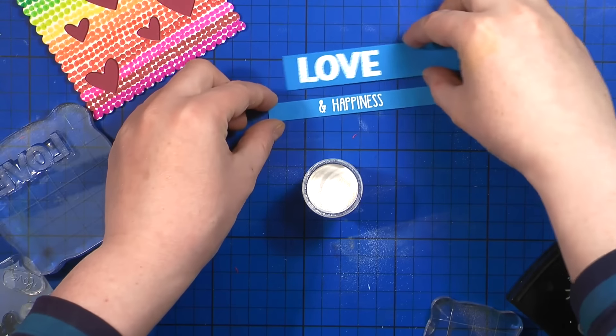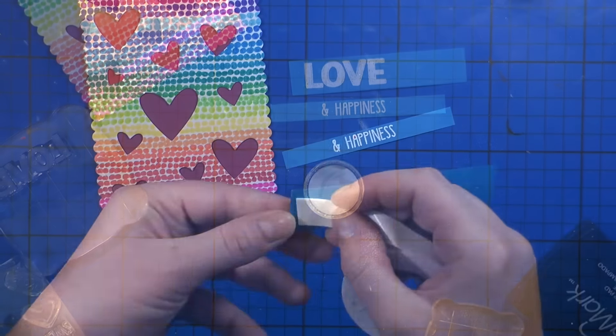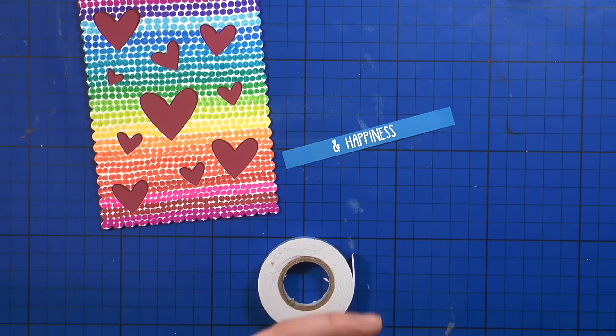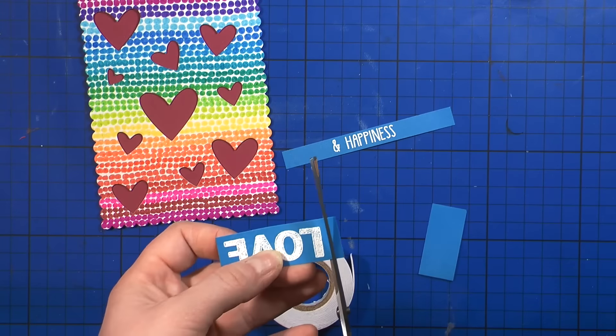And here is the sentiment. I really love how white pops on this blue cardstock. And I'm going to use some double-sided foam tape to pop my sentiments on the card front.